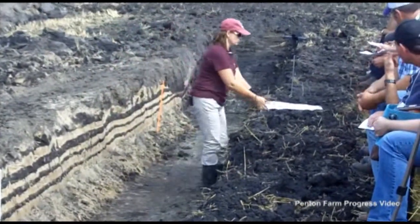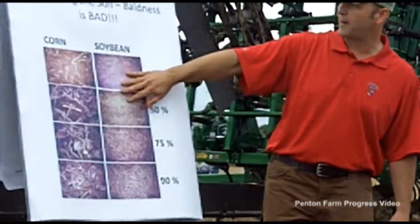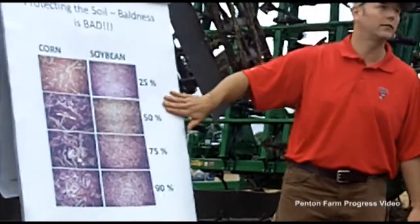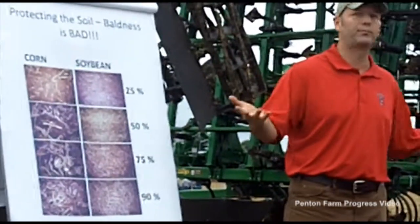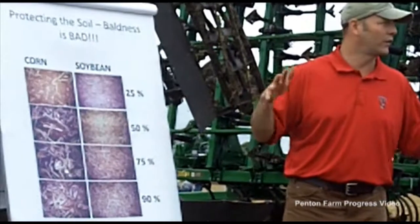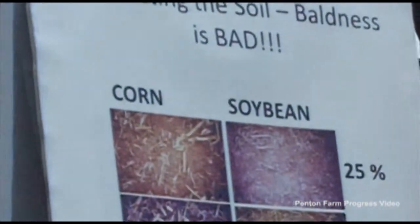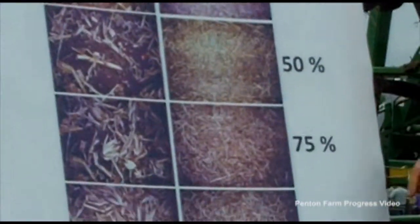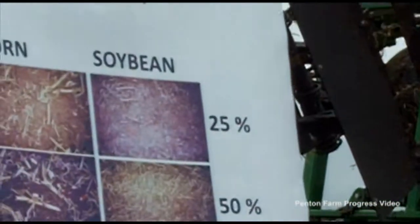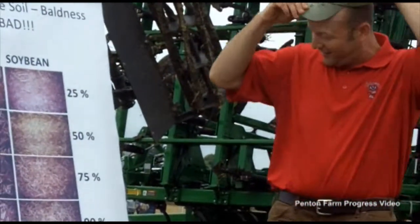Let's talk about soil structure. As an example of the amount of residue on the ground — it's been shown that 30% or higher residue cover helps cut down erosion from fields by about 50% or so. That's just a rule of thumb, but the more residue you have, the more protection you're getting for that soil. The point is that bare soil is bad — that's the cover crop challenge.